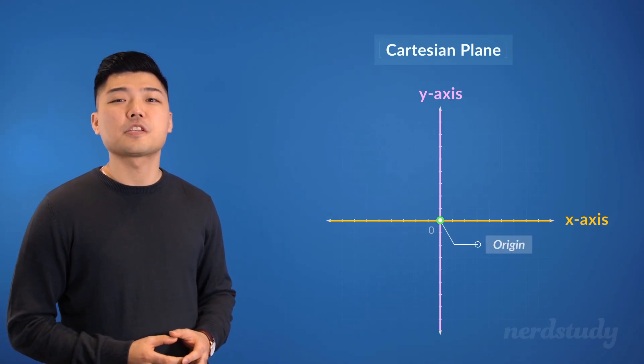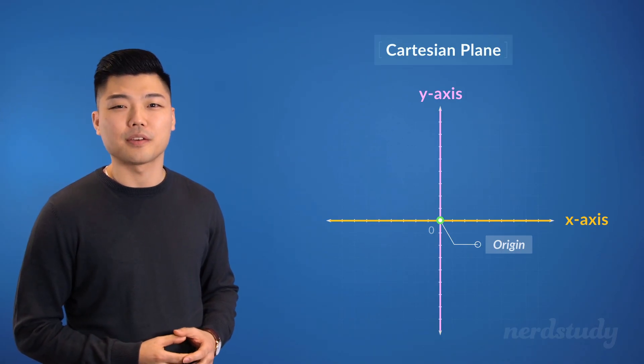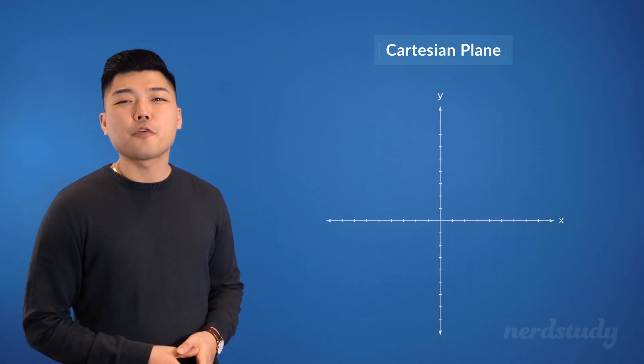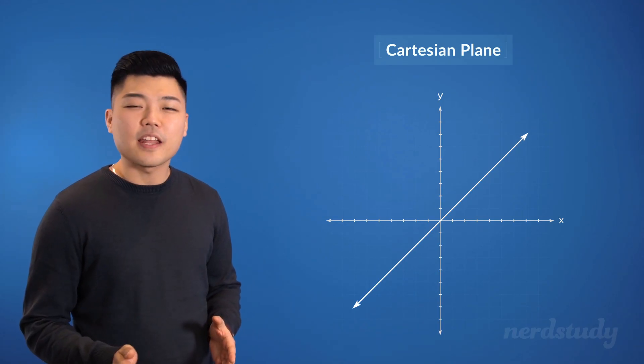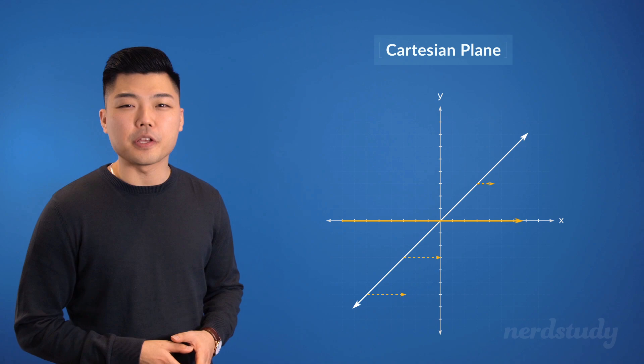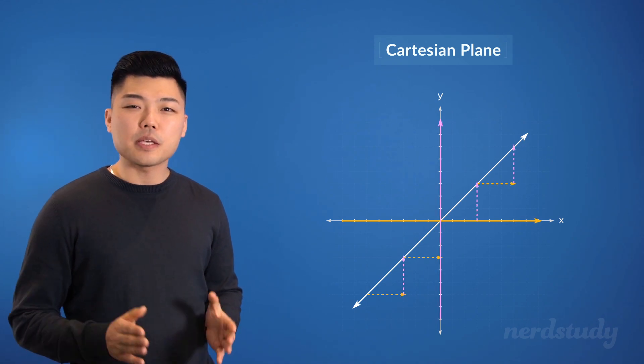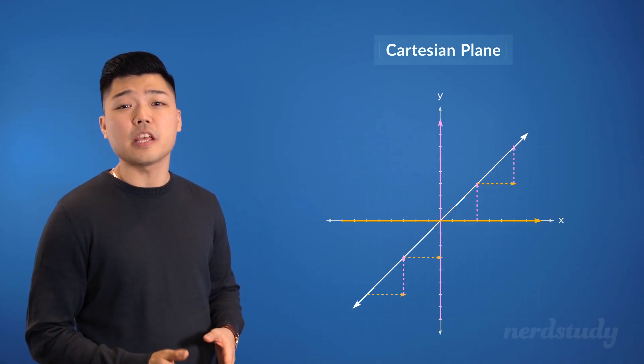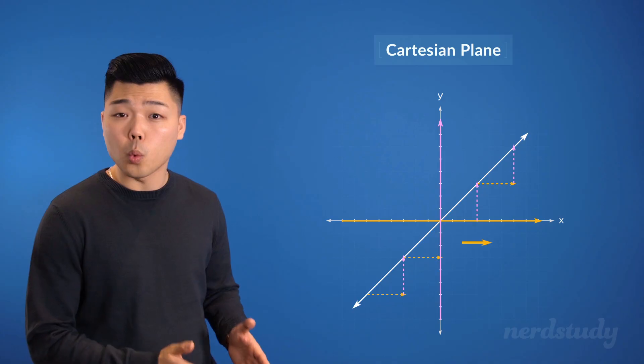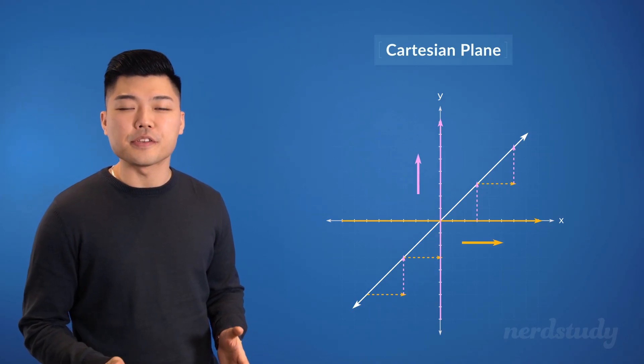This graph gives us the relationship between x and y in a visual way. For example, if we had a line like this, then we would immediately notice that as the x values increase, the y values increase as well. This immediately shows us that this is a graph where when there is an increase in the values on one axis, the values on the other axis increase as well.